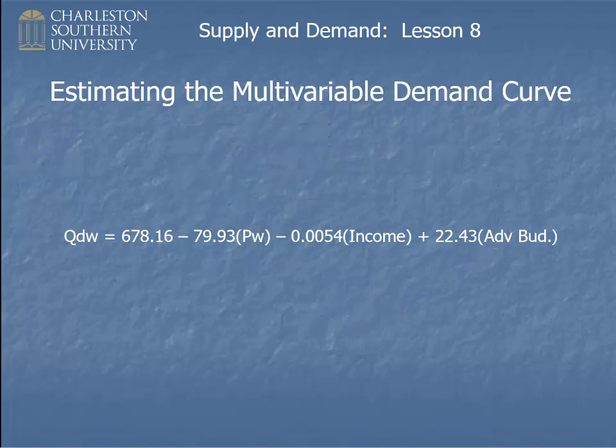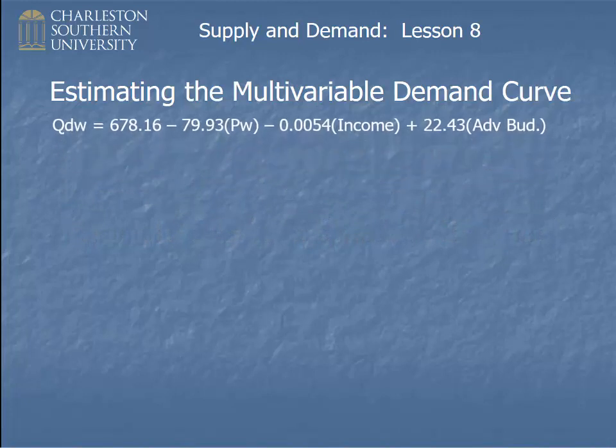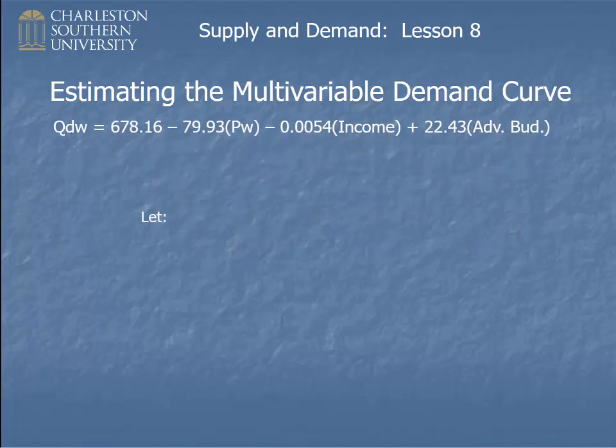If you think about it, once you have this equation, you could figure out elasticities. Here's how to do that. We just need values for these things. I looked at the data set, and I picked typical values for these things. Imagine that the price of widgets was $1.20, and income was about $28,200, and the advertising budget was $22.25.